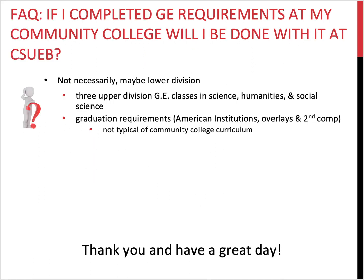If you completed GE requirements at a community college or junior college, will you be done at CSU East Bay? Not necessarily. You might have your lower division completed, but there are three upper division GE courses — in Science (B6), Humanities (C4), and Social Science (D4) — that community college courses cannot satisfy, as they would never grant upper division GE clearance. Graduation requirements like American Institutions, overlays, and second composition may have been completed at the community college, but that is not typical.